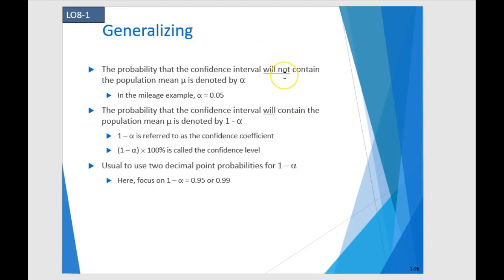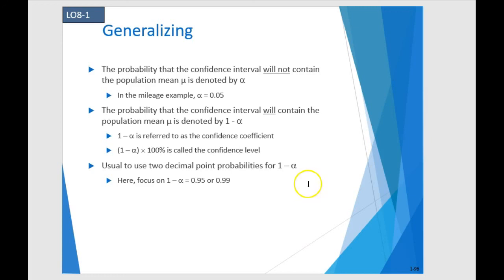When we do confidence intervals we're going to be working with really, really small alphas. So 1 minus a small alpha — the probability that we're correct — is going to be a large number. We want a confidence level of say 95% or 99%. Those are the two that we most commonly use in this course.